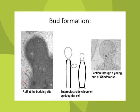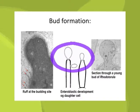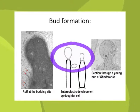The budding in basidiomycetous yeasts is entirely enteroblastic. In enteroblastic bud development, the inner wall of the cell participates in bud formation, and that is why the budding basidiomycetous yeast cells are considered holothallic. In the electron micrograph, the inner wall of the cell is continuous with the wall of the bud.